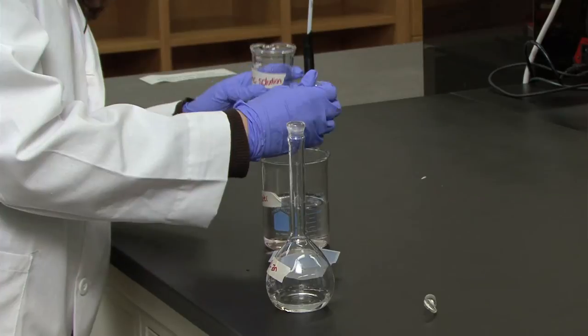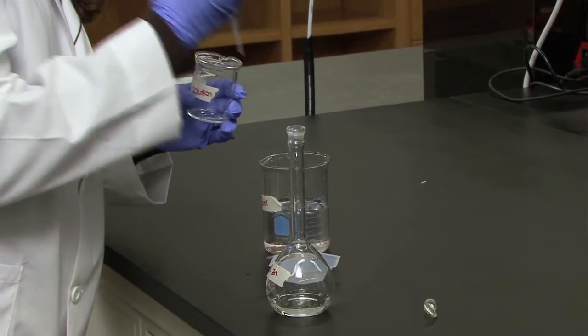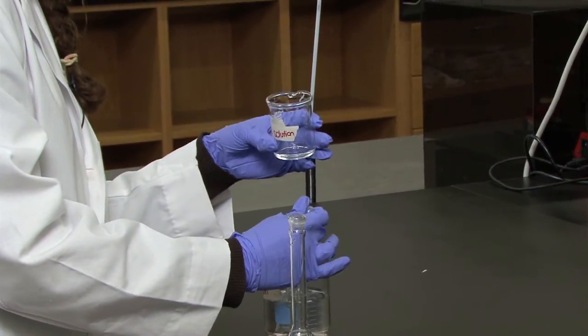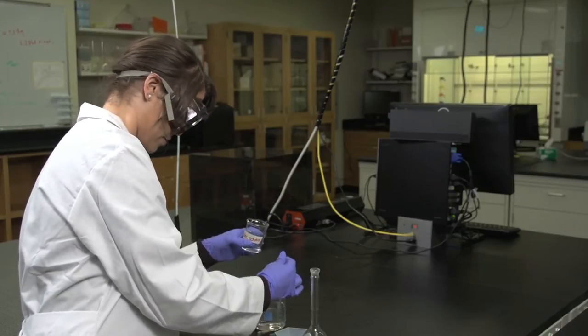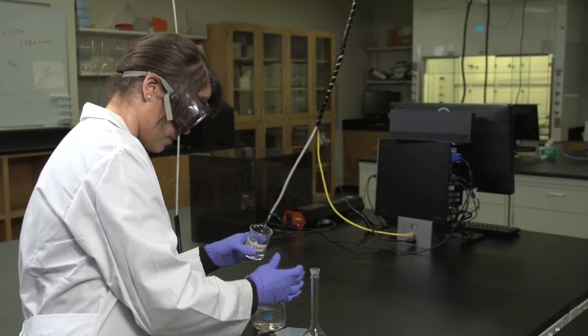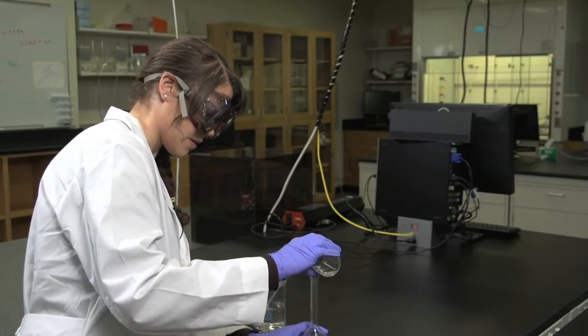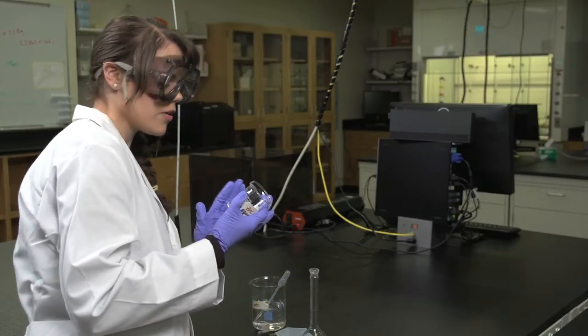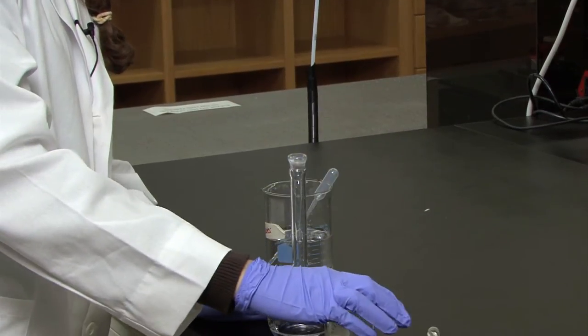I'll just repeat again. You can also swirl it slightly just to make sure you are fully getting all of the zinc. So you would repeat that procedure three more times with the beaker which held the zinc.